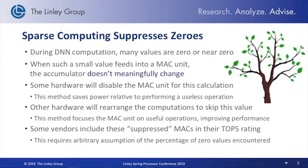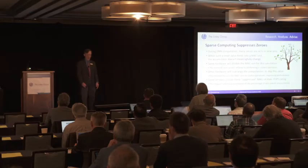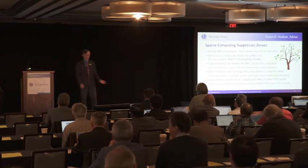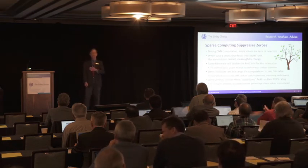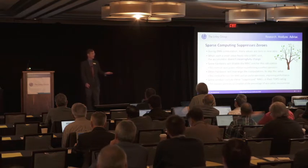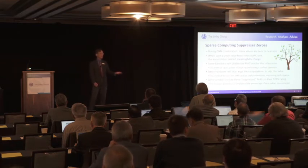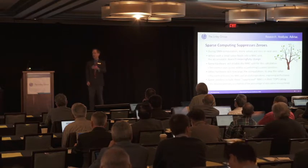One issue is how you count performance. Some vendors claim a MAC operation even when they skipped it due to a zero value, which isn't really meaningful. But regardless of how you count your ops, you're still going to have better performance in your neural network because you're not doing useless operations. This is being implemented in more accelerators today and is a good advance.